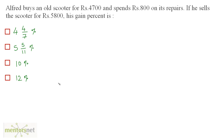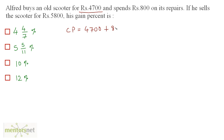Alfred buys an old scooter for Rs 4700 and spends Rs 800 on its repairs. If he sells the scooter for Rs 5800, what is his gain percentage? The cost price is Rs 4700, but he also spends Rs 800 on repairs, so we add that to the cost price. So the total cost price equals 4700 plus 800, which is 5500.